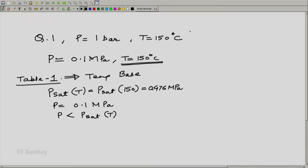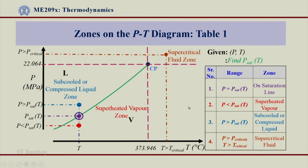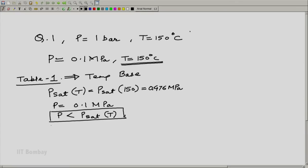What we understand is our p is less than p_sat(T), because 0.1 MPa is less than 0.476 MPa. Going back to the p–T graph, we can see that for condition 2 where p is less than p_sat(T) — this is the red dot — p_sat is 0.476 for T = 150°C, while our p = 0.1 MPa. Therefore this condition of 0.1 MPa and 150°C lies in the superheated vapor zone.